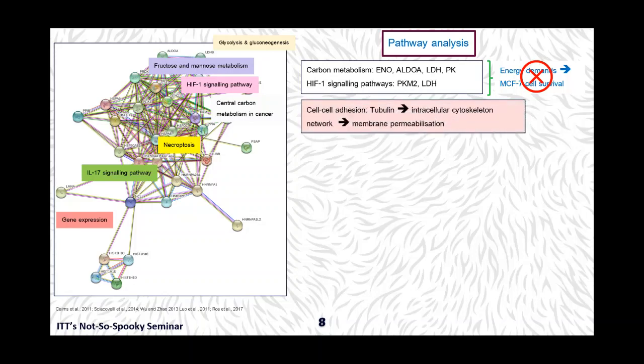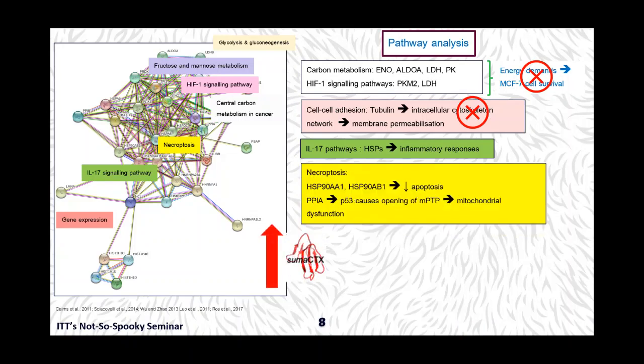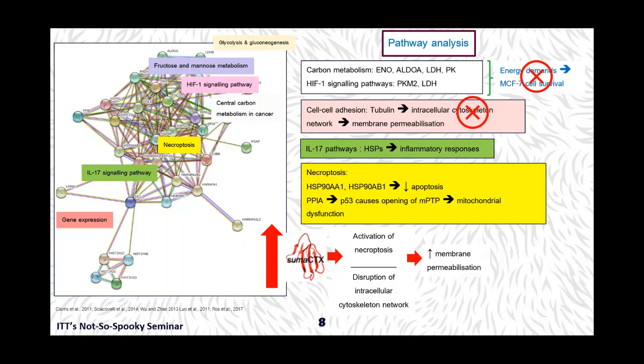Michelle, just mentioning that you're at 10 minutes, so if you could wrap it up, that'd be great. Okay, sure. I'll just quickly wrap it up here. So overall, when there's an increase in SUMA CTX concentration, it leads to activation of necroptosis and eventually disrupts the intracellular cytoskeletal network, which promotes membrane permeabilization. The leakage of metabolic enzymes leads to metabolic deprivation associated with inflammation due to activation of the inflammatory pathway. This causes further cellular damage.